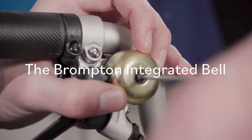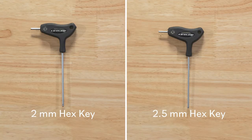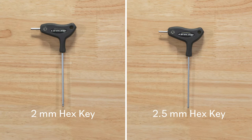The Brompton Integrated Bell. To install this component you'll need a 2mm hex key and a 2.5mm hex key.